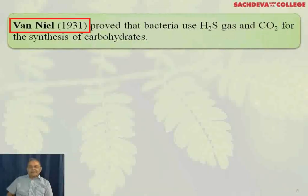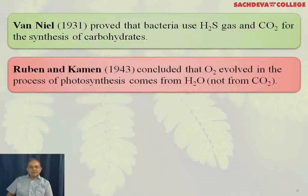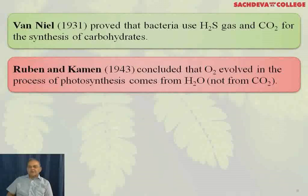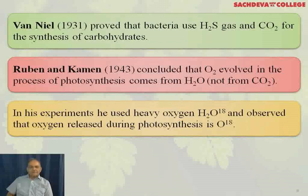Von Niel, in 1931, proved that bacteria use H2S gas and CO2 for the synthesis of carbohydrates. Ruben and Kamen, in 1943, concluded that the O2 evolved in the process of photosynthesis comes from water and not from carbon dioxide. In his experiment, he used heavy oxygen in the water molecule and observed that the oxygen released during photosynthesis was the heavy one — that is, O-18.